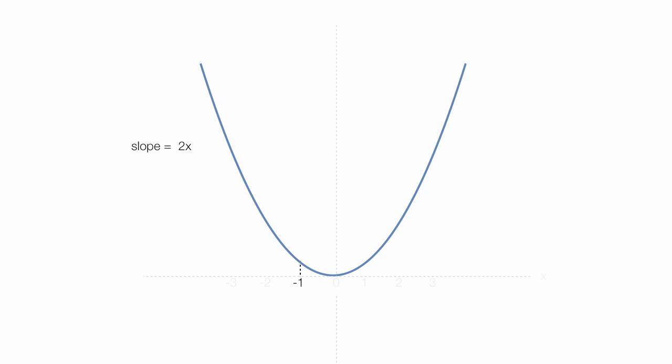When x is equal to negative 1, the slope is equal to, the slope of that tangent line is equal to 2 times negative 1, or negative 2.